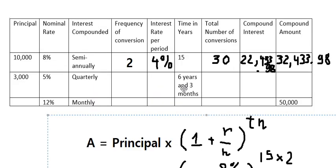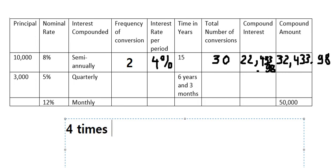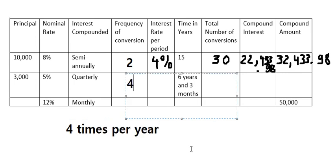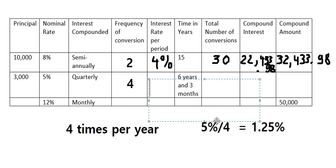Question two: quarterly means the interest compounds four times per year, so frequency of conversions is 4. The interest rate per period is 5% divided by 4, which gives us 1.25%. We put 1.25% in here.